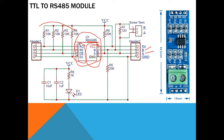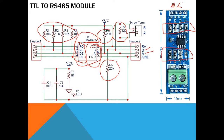The remaining components — pull-up resistors, pull-down resistors, and termination resistors — are all already implemented in the module, so no need to worry about them. We just need to connect this side to an MCU and connect the A and B side to our network, then we will have our network established.